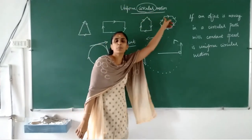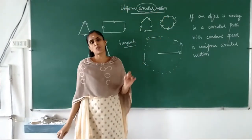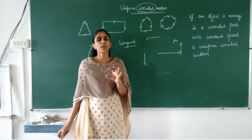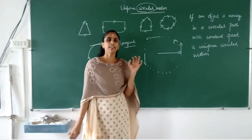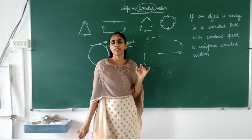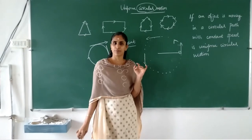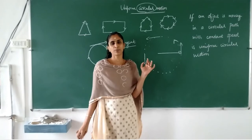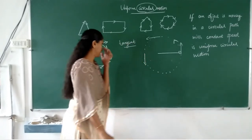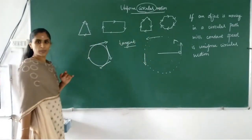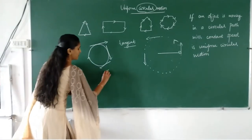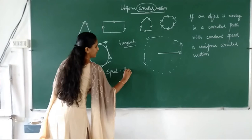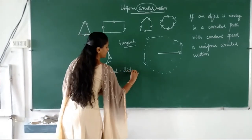What is meant by uniform motion? Speed should remain constant, or we can say equal distances should be covered in equal intervals of time. Then we can say the object is in uniform circular motion. Now, how do we find the speed? Speed can be calculated as speed equals distance divided by time.